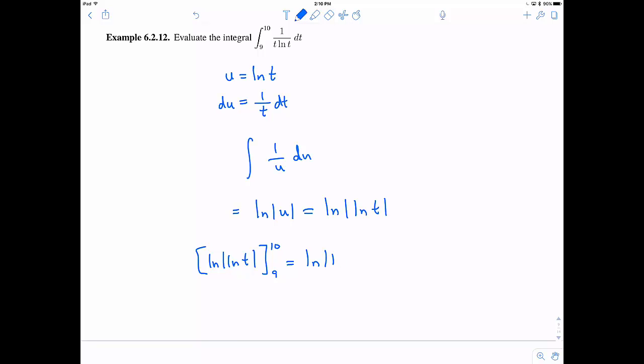And now this goes back to what I was saying earlier. The natural log of 10 is going to be a positive number and the natural log of 9 is going to be a positive number. So I really don't need those absolute value signs. So instead, I could just write the natural log of the natural log of 10 minus the natural log of the natural log of 9. And that would be my final answer.